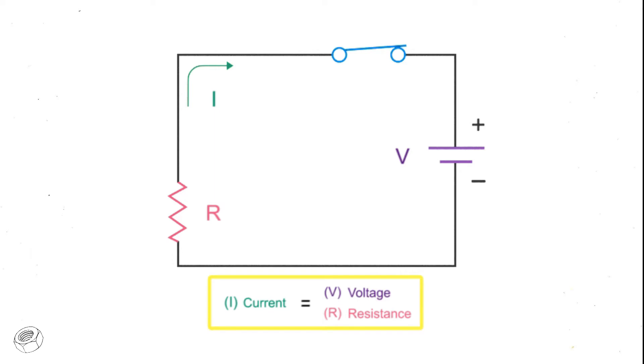Ohm's law states that current is directly proportional to the voltage and inversely proportional to the resistance in a circuit. This means that when you increase voltage and keep resistance constant, current flow increases. As resistance in a circuit increases and voltage remains constant, the current flow decreases.